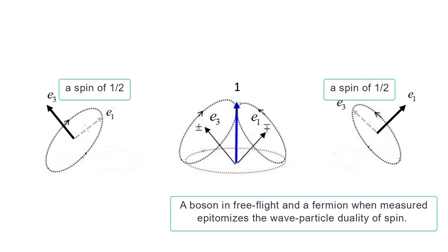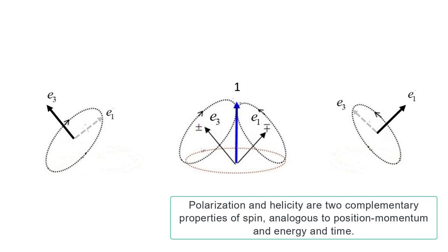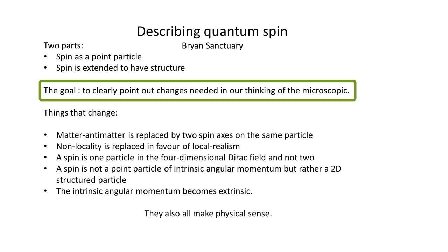This description epitomizes the wave-particle duality of spin, which has hitherto been missed. Like position-momentum and energy-time, angular momentum has two complementary properties: polarization and coherence, or the helicity. The two attributes are in different spaces and do not commute. It is the purpose of this video to explain the origin of spin structure, and to discuss some of the changes that result.